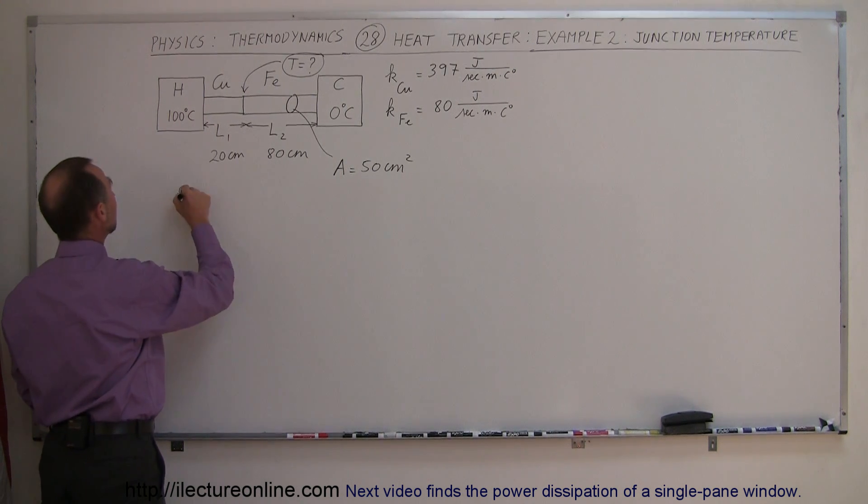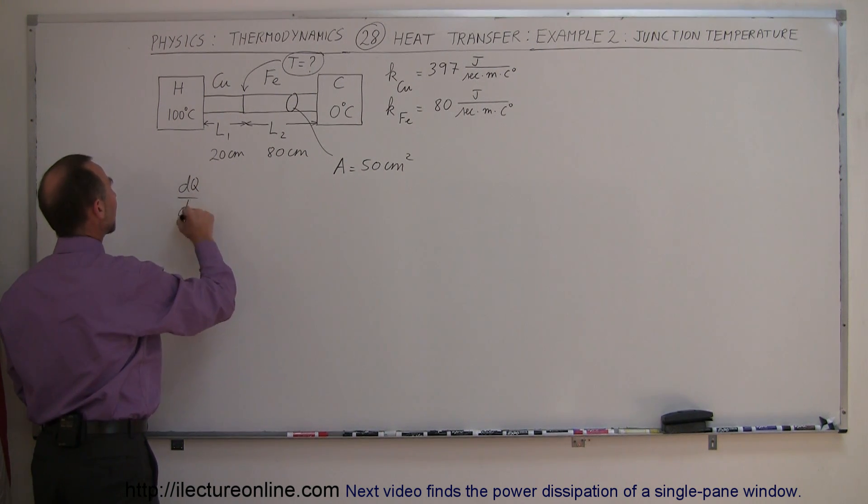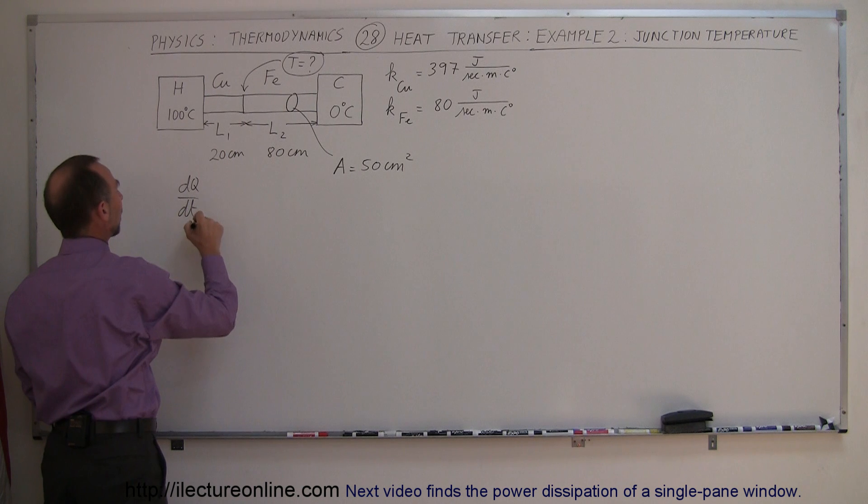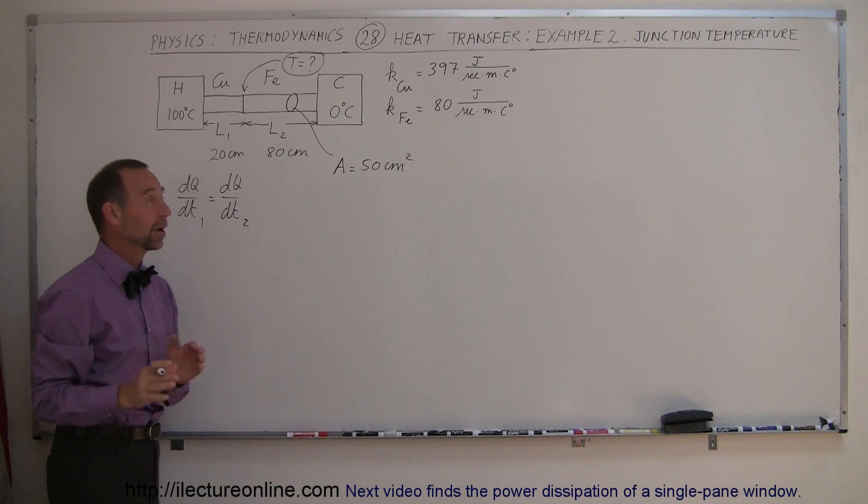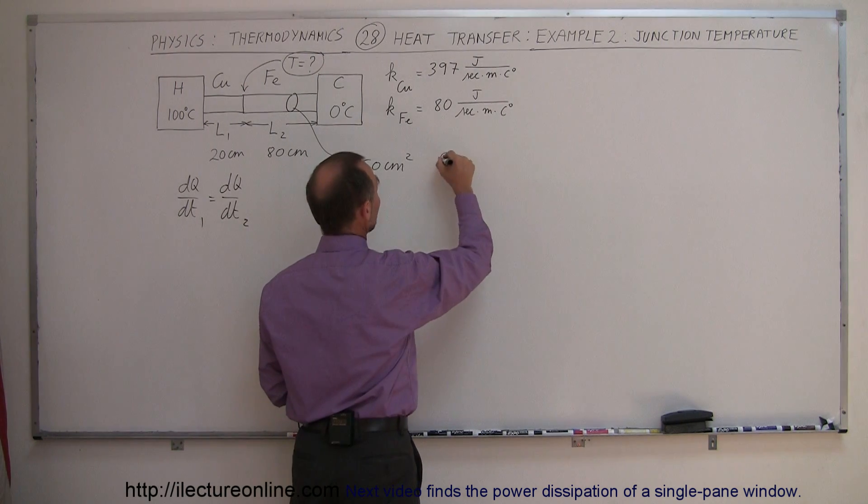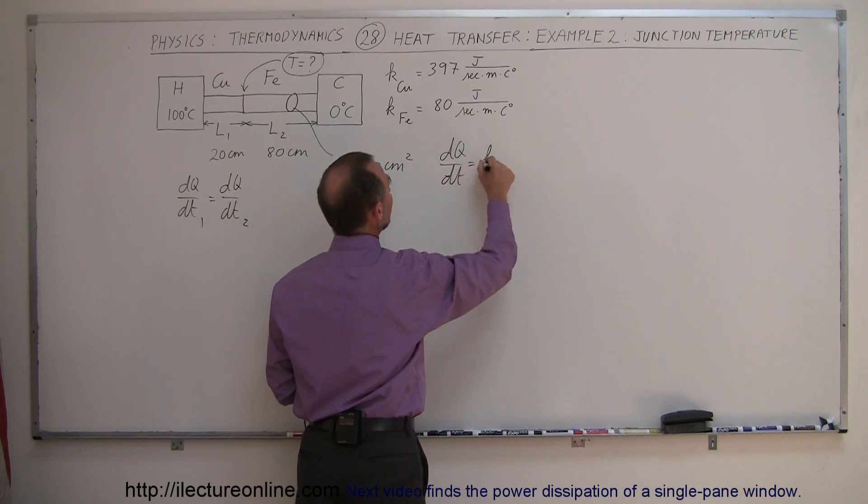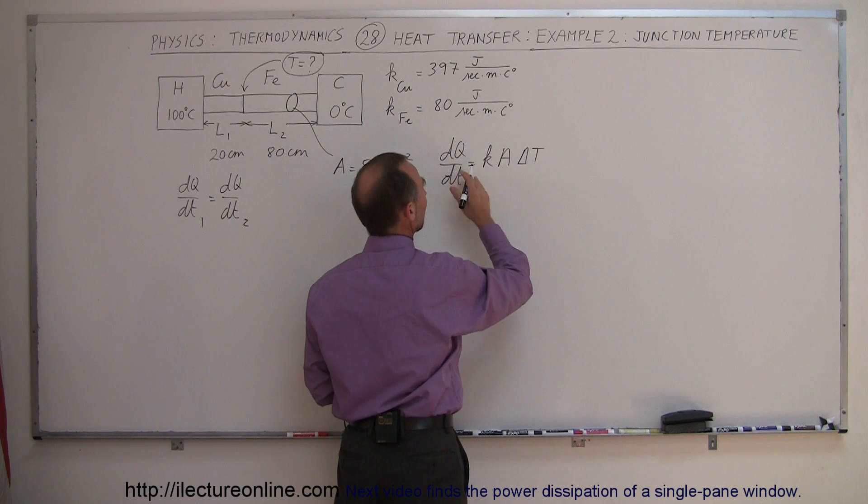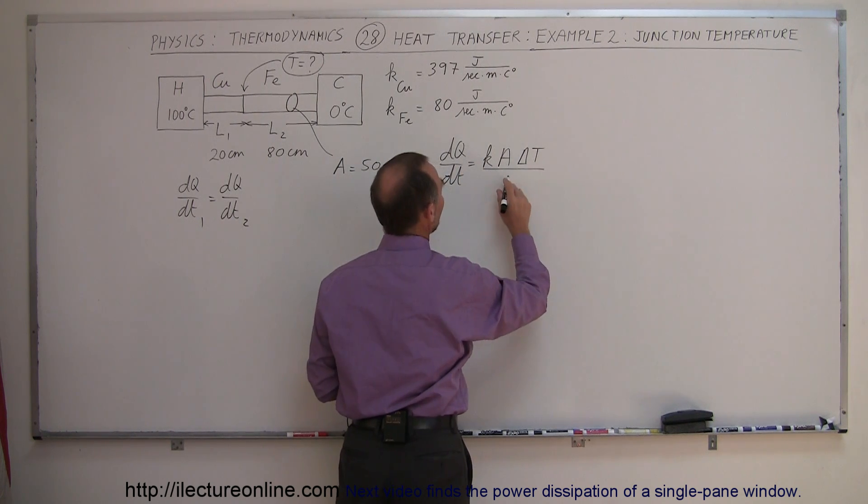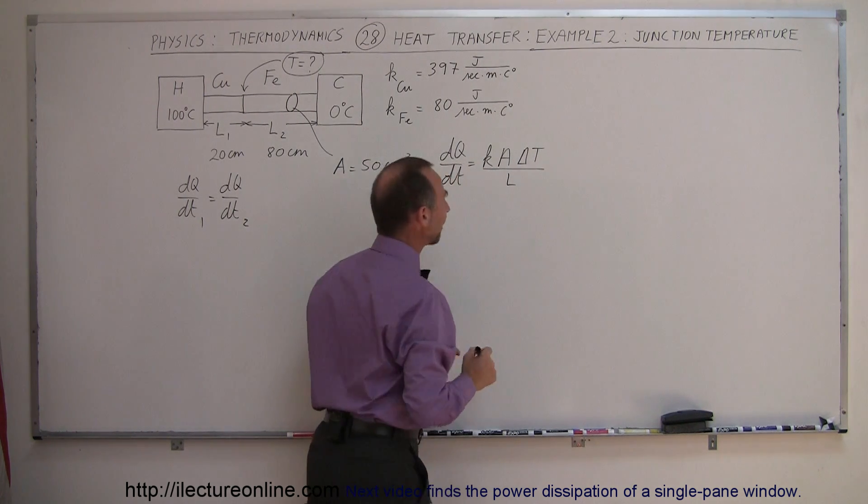So what we can say is that the dQ/dt, the amount of heat transfer on bar number one, must equal the dQ/dt on bar number two. Remember the equation: dQ/dt is equal to K times the cross-sectional area, times the difference in the temperature between the left and the right side, divided by the length of that.